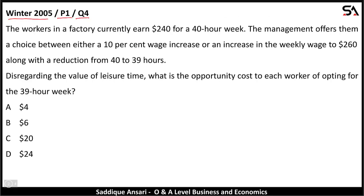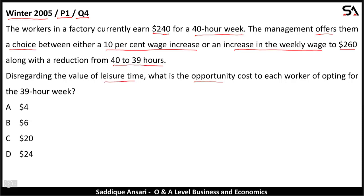The first MCQ is from Winter 2005, Paper 1, Question 4. The workers in a factory currently earn $240 for a 40-hour week. The management offers them a choice between either a 10% wage increase, or an increase in the weekly wage to $260 along with a reduction from 40 to 39 hours. Disregarding the value of leisure time, what is the opportunity cost to each worker of opting for the 39-hour week?